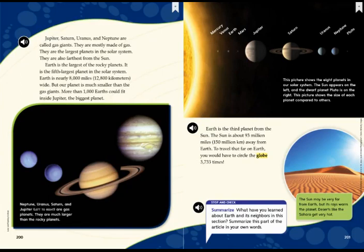Earth is the third planet from the sun. The sun is about 93 million miles away from Earth. To travel that far on Earth, you would have to circle the globe 3,733 times. The sun may be very far from Earth, but its rays warm the planet. Deserts like the Sahara get very hot. In this paragraph, this sentence says the sun is about 93 million miles away from Earth. How does Earth stay warm if it's so far away from the sun? Down here in this caption, it explains that the sun may be very far from Earth, but its rays warm the planet.